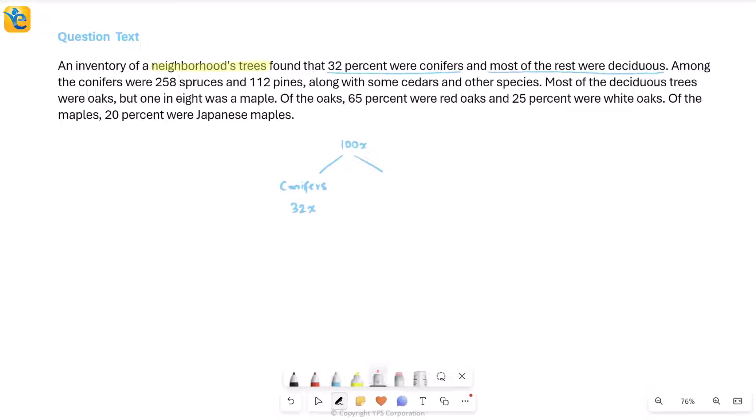Then deciduous trees, we're talking about most of the rest, not all of the rest. So first of all, I try to see this rest, those that are not conifers. This is going to be 68X. Now, how many of these are deciduous? You do not have an exact number because they are saying it's most of the rest. But what does most mean? Most means more than half.